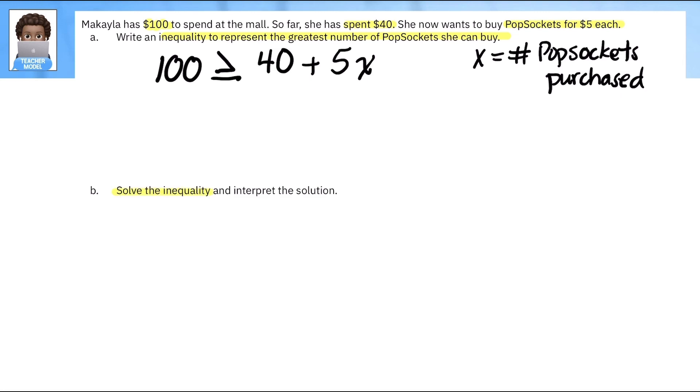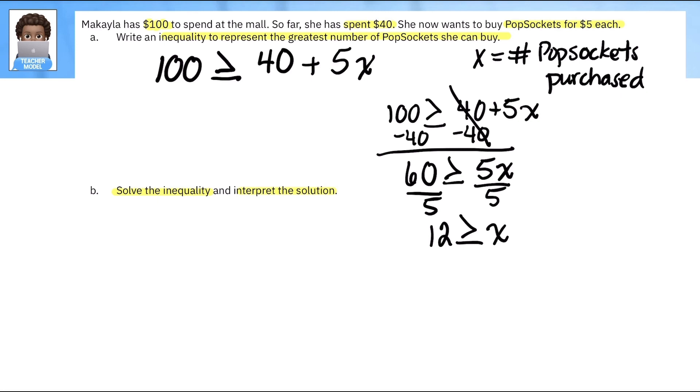Here we go. Solve the inequality and interpret the solution. All right, so let's actually solve it. 100 is greater than or equal to 40 plus 5X. We'll subtract 40 from both sides so that all the constants are on one side. So 60 is greater than or equal to 5X. Isolate that variable. 12 is greater than or equal to X.